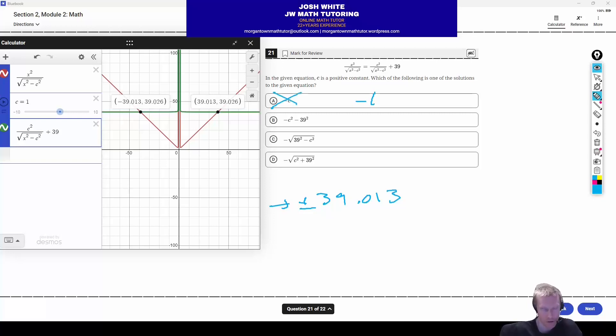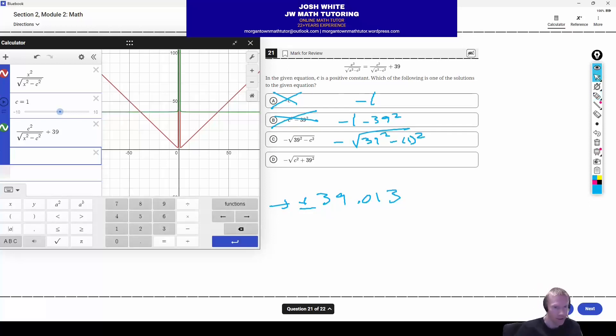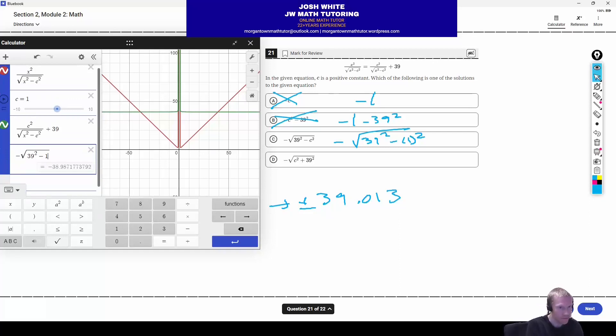Third one, we have negative square root 39 squared minus 1 squared. So this, obviously, you don't know, probably don't know what it is in your head. So just go ahead and type it in. Okay. So this comes out to negative 38.987. That is close to 39.013, but it is not the exact number. So this is wrong.